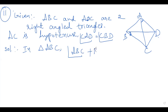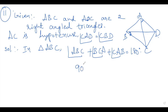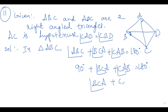Angle B, C, A plus angle C, A, B plus angle C, A, B is equal to 180 degrees — angle sum property. They have given angle B is equal to 90 degrees. So in place of angle ABC we write 90 degrees. Angle B, C, A plus angle C, A, B is equal to 180 minus 90, that is 90 degrees. Call this equation number one.